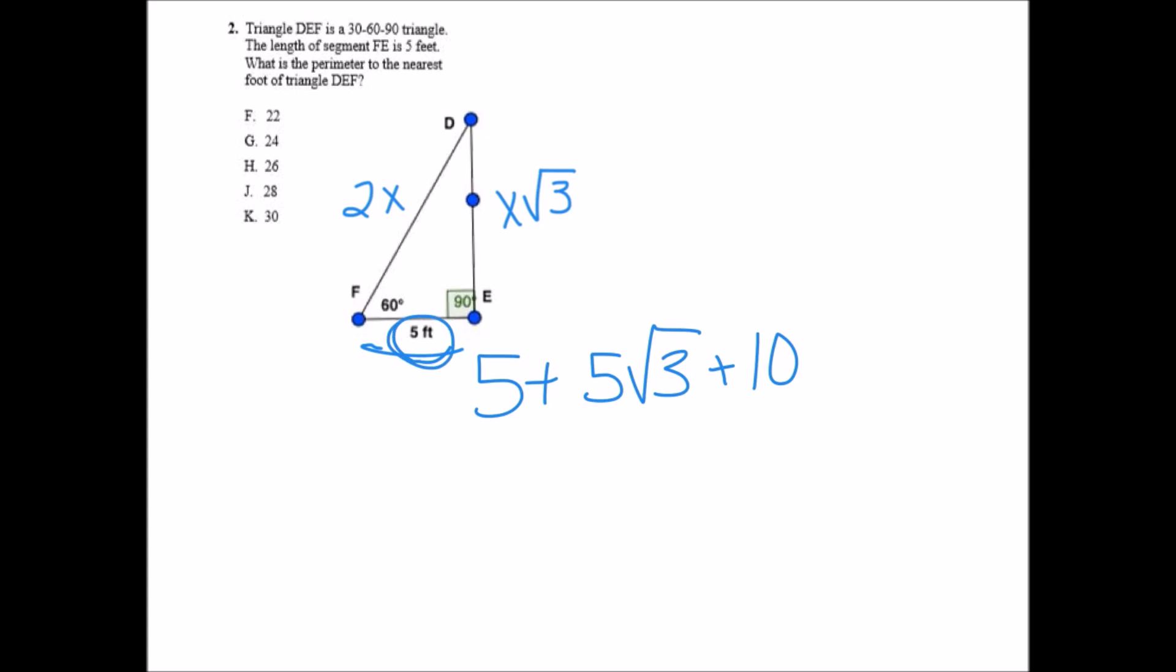We knew that x was 5, so we plug that in. This was x times the square root of 3, so that became 5 times the square root of 3, and 2 times x became 10. When you combine the like terms you get 15 plus 5 the square root of 3, which is 8.66 plus 15 gives us 23.66. When we round that we end up with 24. The correct answer is G.